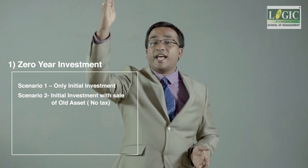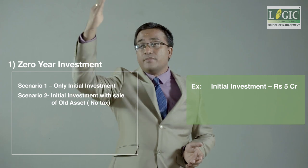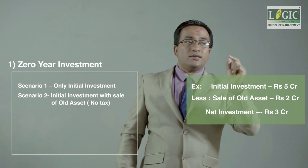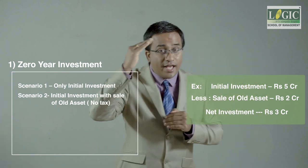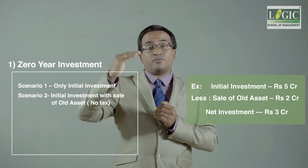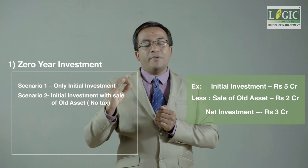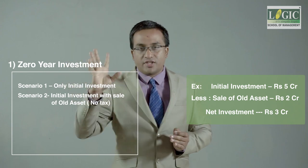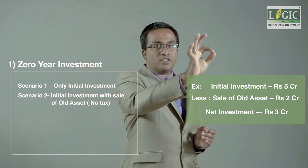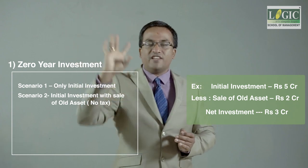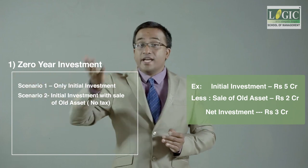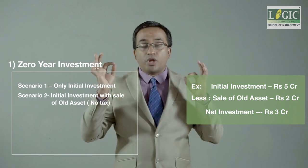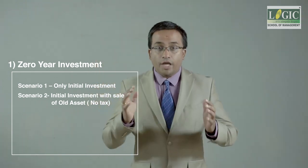In scenario two, assume the initial investment required is 5 crores. Against that, the investor gets 3 crores from the sale of the old asset. So the net investment required becomes 5 minus 3, which is 2 crores. That is the net investment for scenario two.